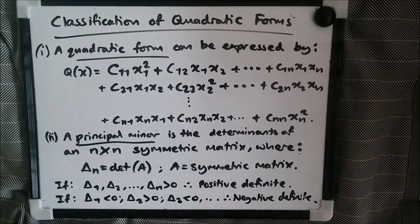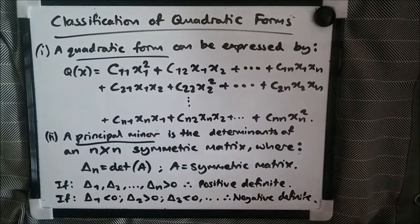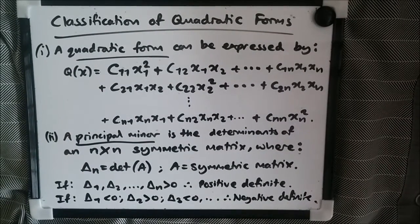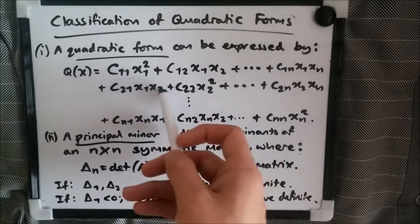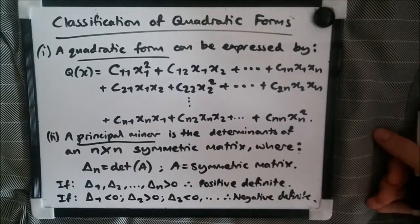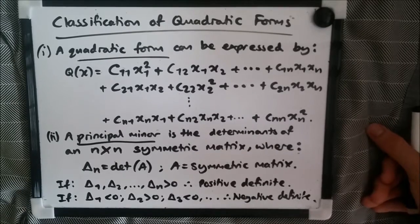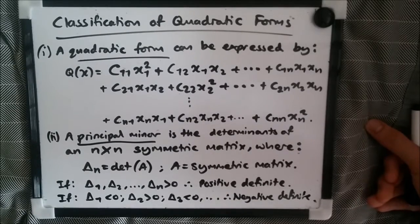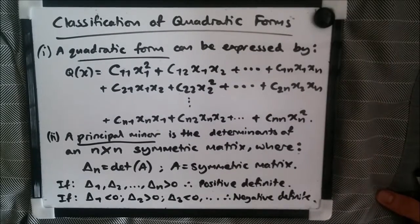Hey, how's it going guys? In this video we're talking about the classification of quadratic forms — a topic in linear algebra related to eigenvalues and eigenvectors. It's called quadratic because some terms when multiplied by themselves can go up to the power of two, making it a quadratic equation, or more precisely an extended quadratic form. You may need to pause this video a few times to write things down and take notes.